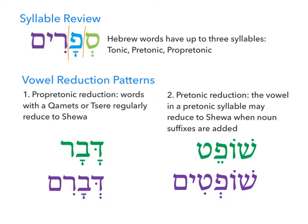Let's do a quick review of those terms so we're all on the same page. A Hebrew noun's default position, unless there's an accent marked otherwise, will have the accent on the final syllable — we emphasize that final syllable. For that reason, we've been calling that the tone syllable or the tonic syllable.